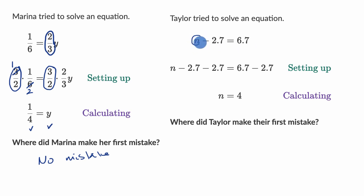In order to isolate this N over here, I would add 2.7 to both sides. But that's not what Taylor did. Taylor subtracted 2.7 from both sides. So the first place that Taylor starts to trip up or move in the wrong direction is right over here.